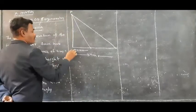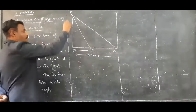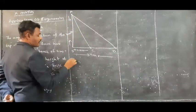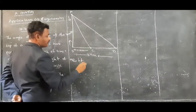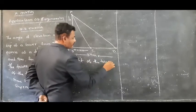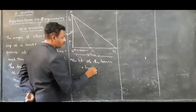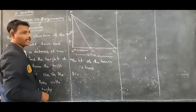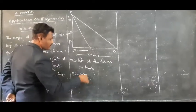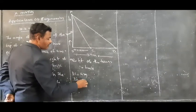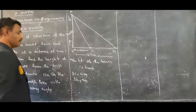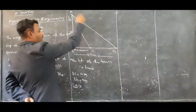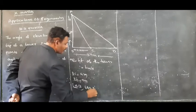Let the points be named A, B, C, and D. Here AB is the tower. What is the height of the tower? Let it be H meters. So AB equals H meters. BC equals the distance between the base of the tower and the first point, which is 4 meters. BD equals 9 meters. Angles ACB and ADB are complementary angles.